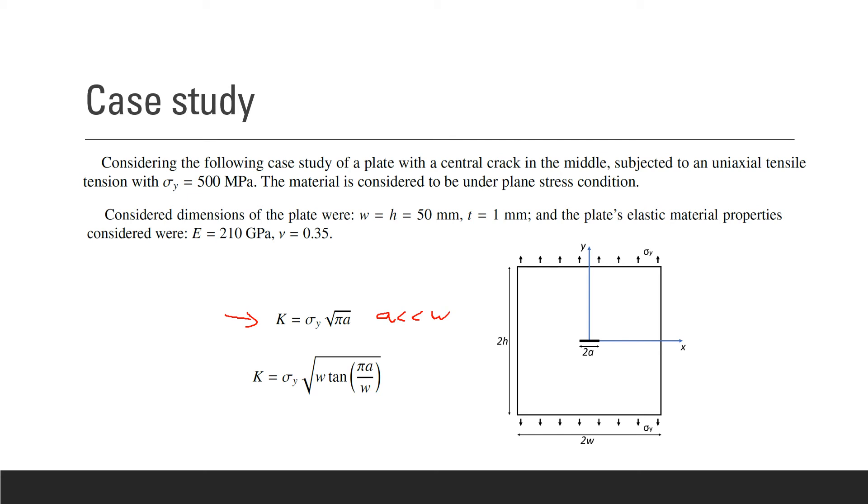But this is only valid when a is much less than the width of the plate. So if this no longer is true, K is now obtained through this periodic equation for a periodic crack.